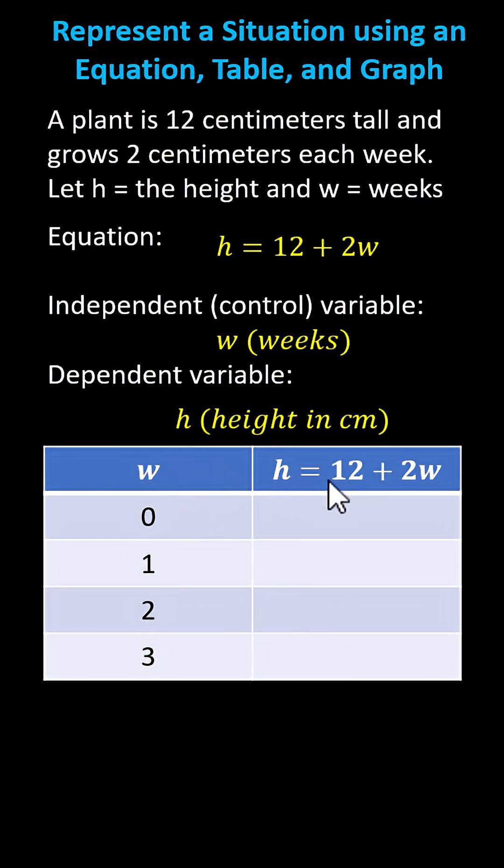When the number of weeks is zero, the height is 12 plus 2 times 0 centimeters or 12 centimeters. After one week, the height is 12 plus 2 times 1, or 12 plus 2, or 14 centimeters. After two weeks, the height is 12 plus 2 times 2, or 12 plus 4, which is 16 centimeters. After three weeks, the height is 12 plus 2 times 3, or 12 plus 6, which is 18 centimeters.